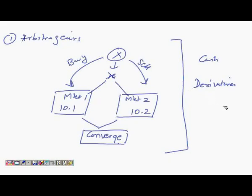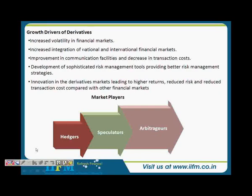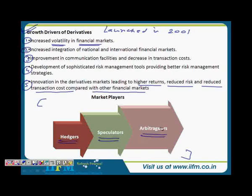Arbitrage also happens between the cash market and the derivatives market. For example, if a security is trading at 10 in the cash market and at 9.8 in the futures market, the arbitrageur will buy in futures and sell in the cash market — and again the prices will converge. That's how arbitrage typically works: either mispricing between two markets, or mispricing between the cash and derivatives segment. All three market participants — hedgers, speculators, and arbitrageurs — are very important to make a market a wholesome market.